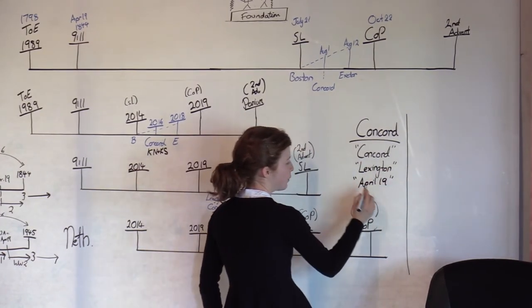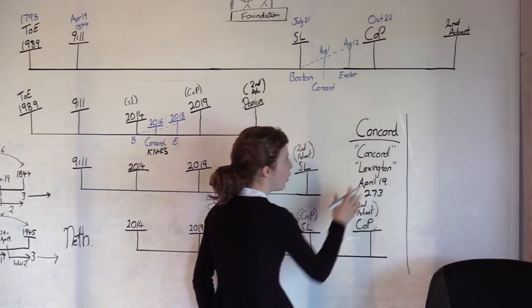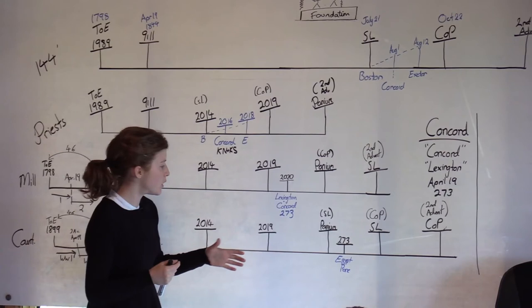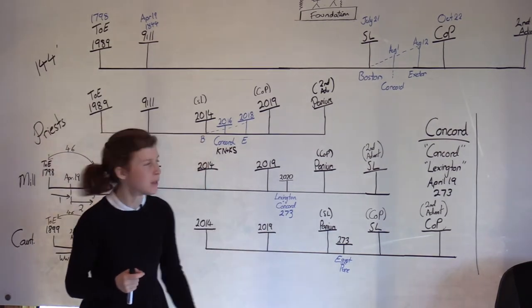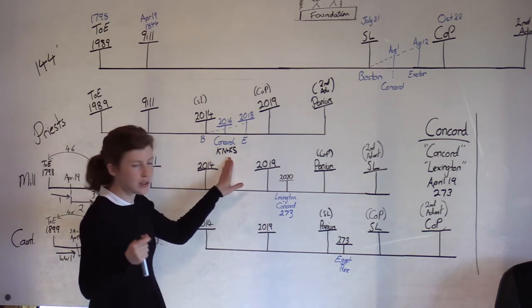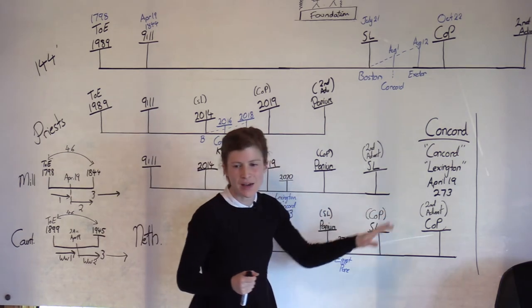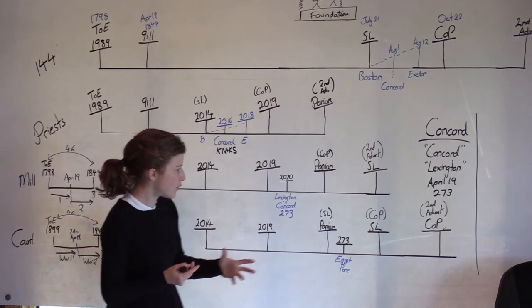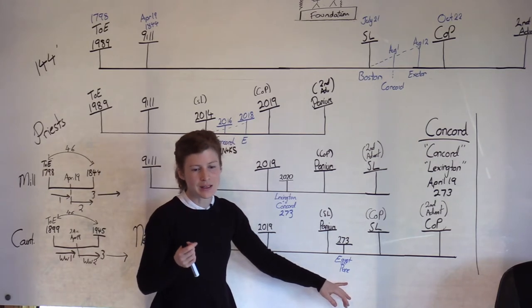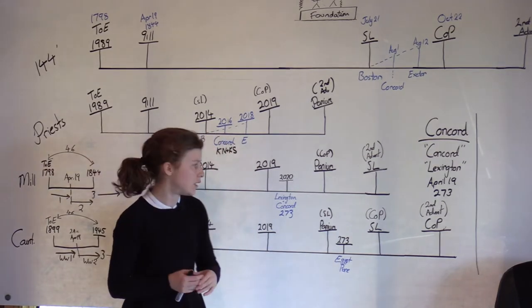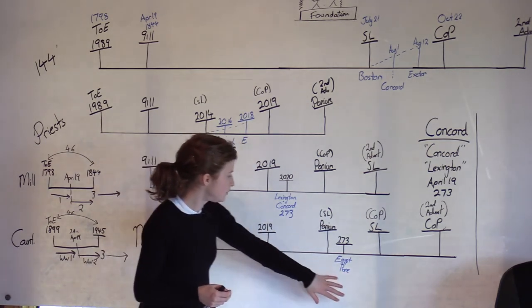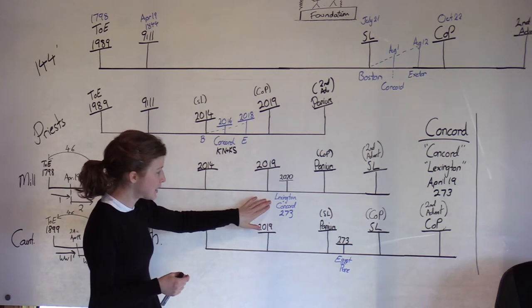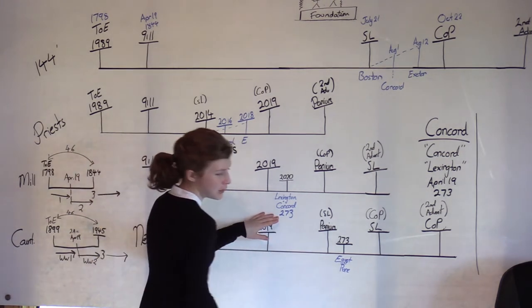So, Concord, Lexington, April 19 and the number 273. All symbols that coincide with this waymark of Concord. And I'd like also to stipulate that we don't have to see every symbol at each one of these waymarks. I'm yet to see 273 in 2016. But the number 273 is something that was particular for the Levites. So, it makes sense that we first mainly see it in the history of the harvest of the Levites. But they're being stitched together.